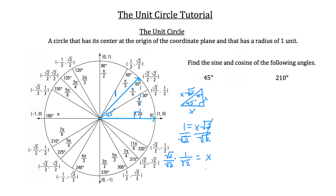When you do that, on top you get root 2 times 1, which is root 2. And on the bottom you get root 2 times root 2, which is the square root of 4, which equals 2. So x is equal to the square root of 2 over 2.